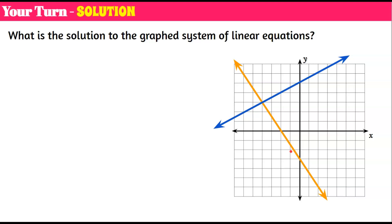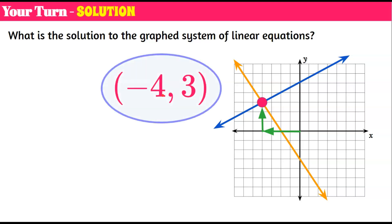Welcome back. Our solution is where they intersect. Starting from the origin, going left four and up three, the point of intersection is the ordered pair negative four, three. That is the solution to our system of linear equations — the only point on both lines that is a solution to each linear equation as well as the system.